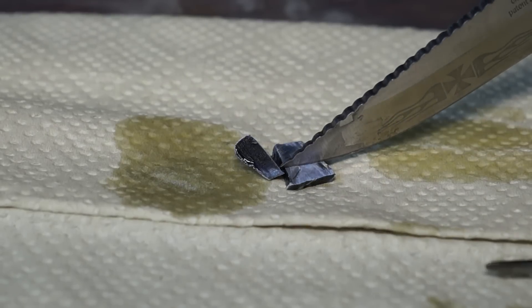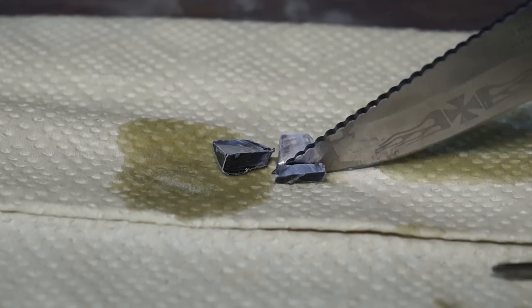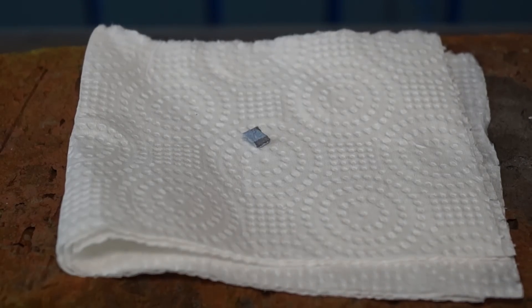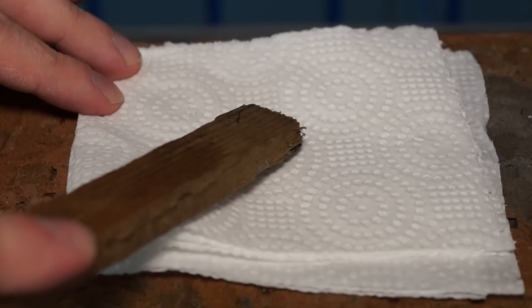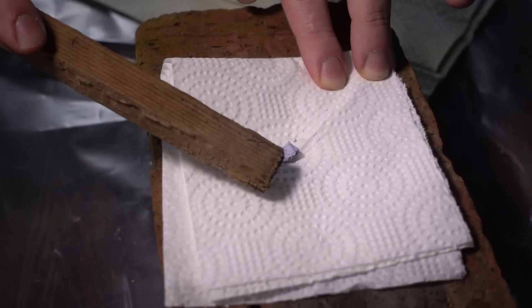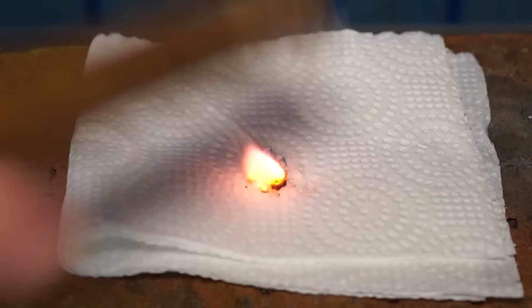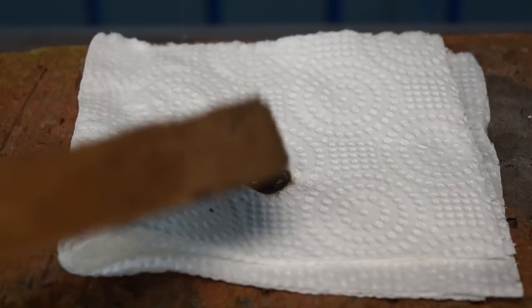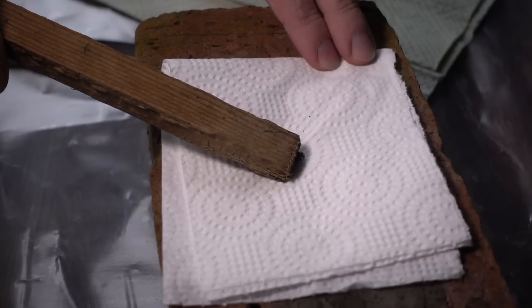Because of its high activity, potassium may spontaneously ignite in air. I took a small piece of potassium and began to spread it on a napkin. Once the napkin is coated with a thin layer of potassium, the latter reacts with oxygen and ignites.